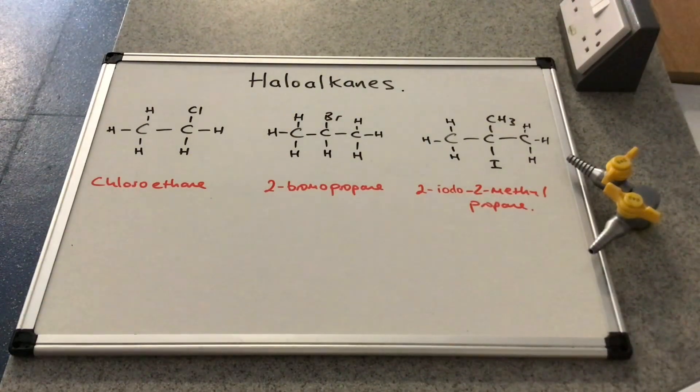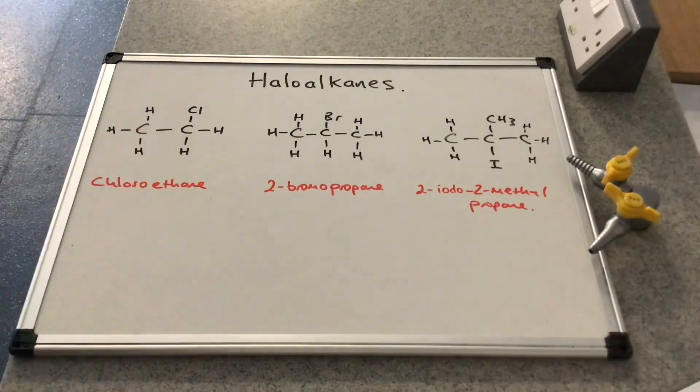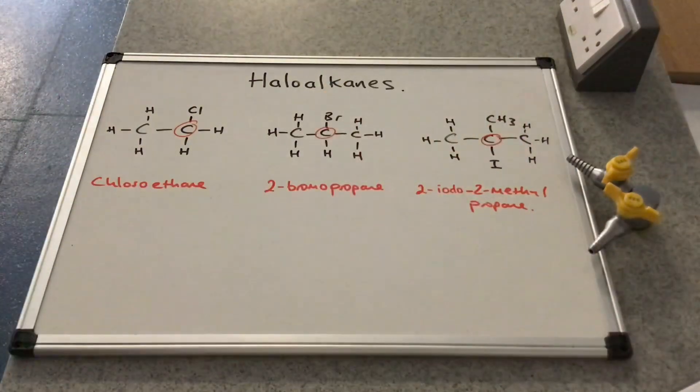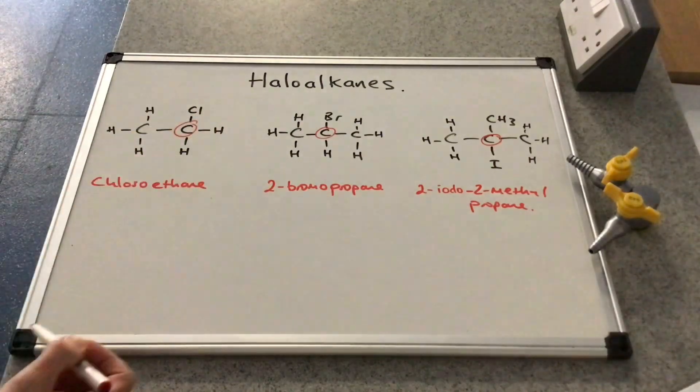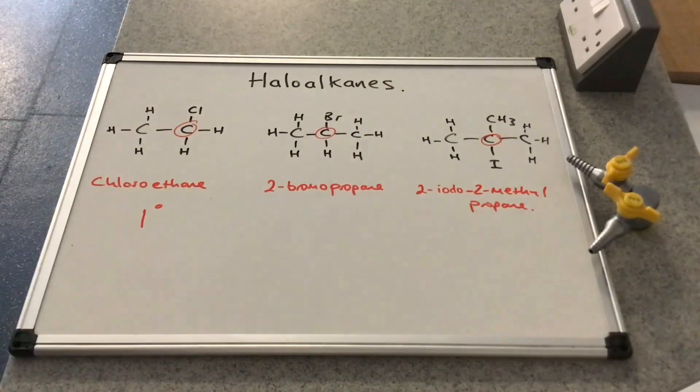In terms of classifying haloalkanes, it's just like how you classify an alcohol. So it's all to do with the number of carbon atoms that are directly attached to the carbon with the halogen on. So if I just circle these, this one here has got one carbon directly attached to the carbon with the halogen on, so this is a primary haloalkane.